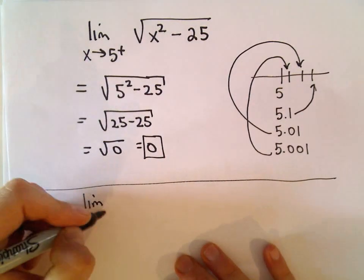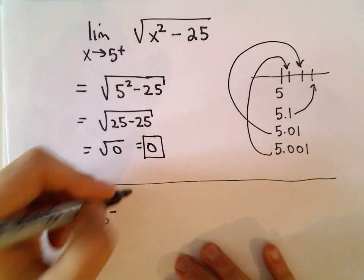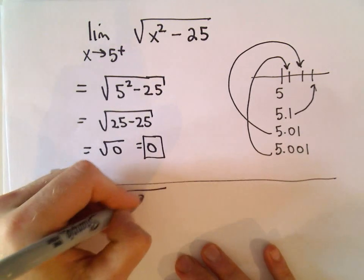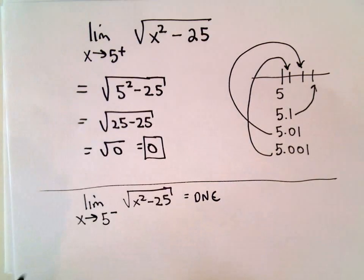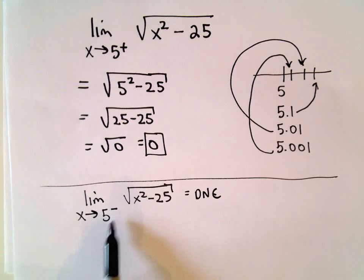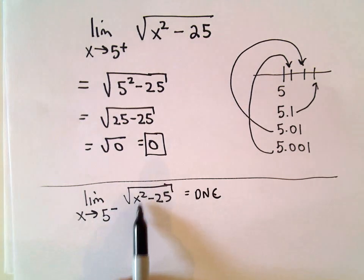If somebody said what's the limit as x approaches 5 from the left? Here I would say this does not exist, it doesn't really make sense to ask this question.